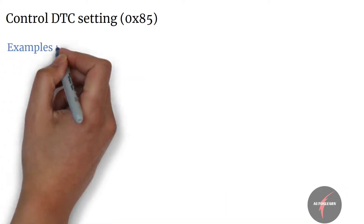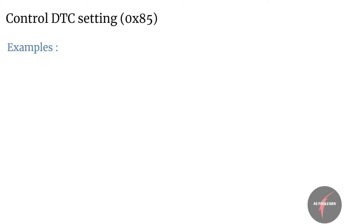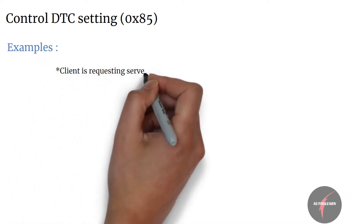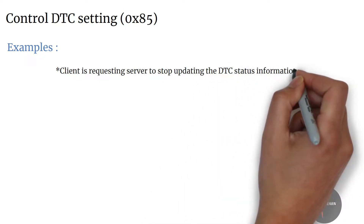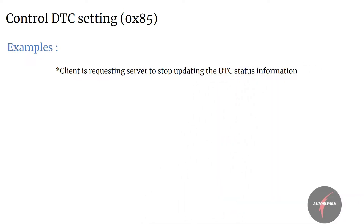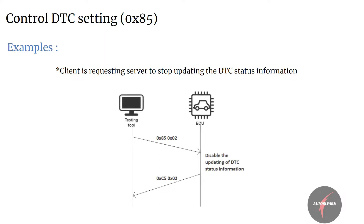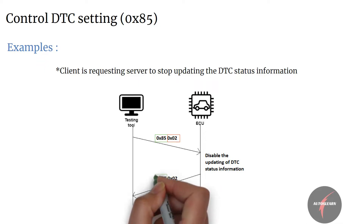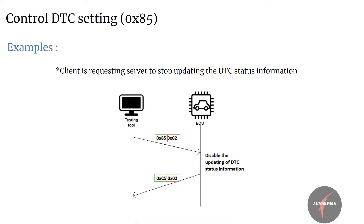Let's now look into examples. Firstly, the scenario is where the client is requesting the server to stop updating the DTC status information. The request shall be as follows: Control DTC Setting request SID shall be set to 85 with the sub-function DTC setting type set to 02. Following which, the server shall disable the updating of DTC status information and respond with Control DTC Setting response SID set to C5 with the sub-function set to 02, which is the same as the request.